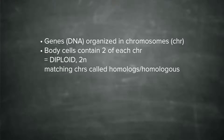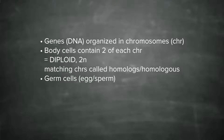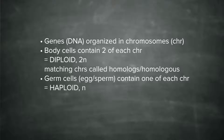This two-fold number gets a special name: it is called diploid, abbreviated 2n. The matching chromosomes are called homologues, which means that they match. On the other hand, the germ cells — the eggs and the sperm — only have one of each chromosome. This is called haploid, written as lowercase n.